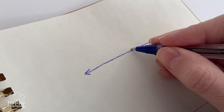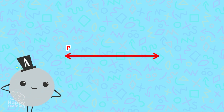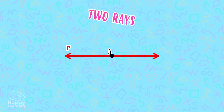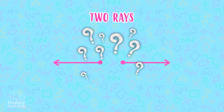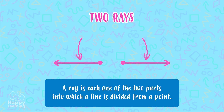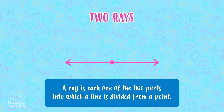Now, if we cut this line with a point — Mr. Point A, can you cut this line, please? What happens is that we now have two rays. Why? Because a ray is each one of the two parts into which a line is divided from a point. The ray has a definite point of origin, which in this case is point A, but it can stretch to infinity and beyond.